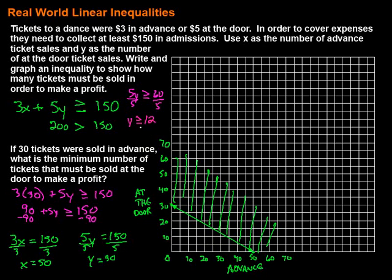So we need to sell at least 12 tickets at the door in order to make a profit. Notice all the work I had to do to figure that out algebraically — but my graph told me that without even doing all that calculation. That's where these graphs are really handy, especially if you create them using technology. This one is a little by hand, so we don't have perfect accuracy, but we knew it was close to 12, and sure enough that's what we got.